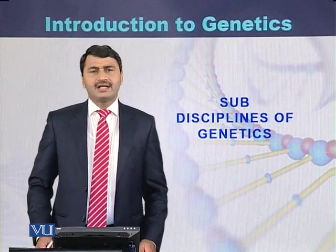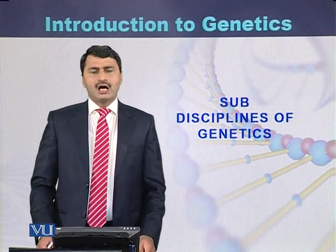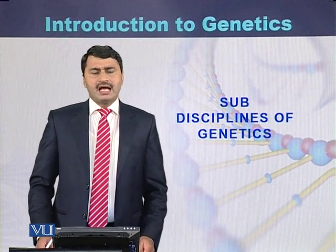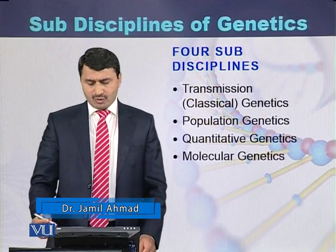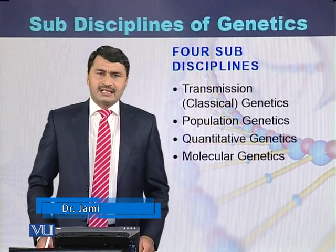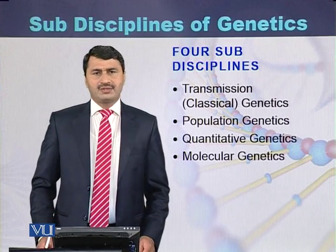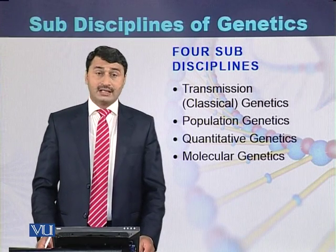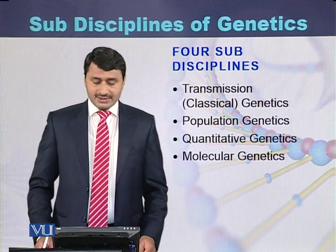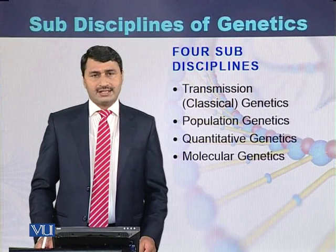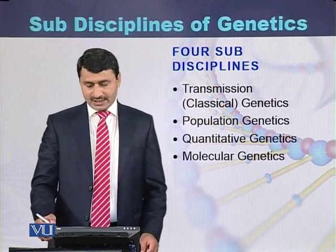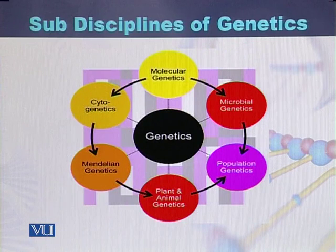Genetics can be classified into four sub-disciplines, although some geneticists and researchers classify genetics into many sub-disciplines. But most geneticists classify genetics into four sub-disciplines. The four sub-disciplines of genetics are transmission or classical genetics, population genetics, quantitative genetics, as well as molecular genetics. These are the four major sub-disciplines of genetics.